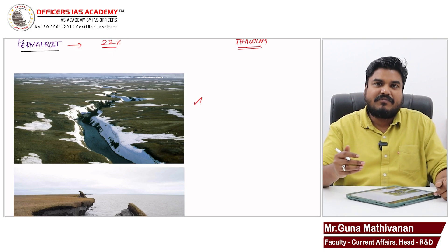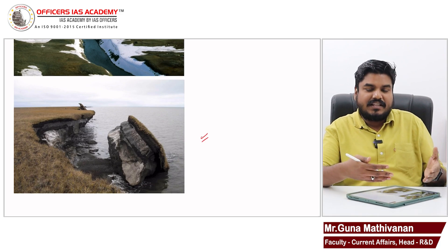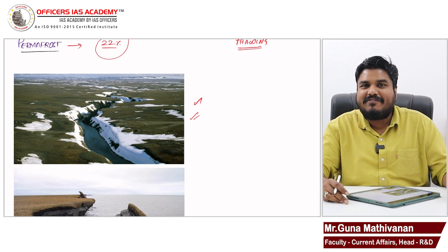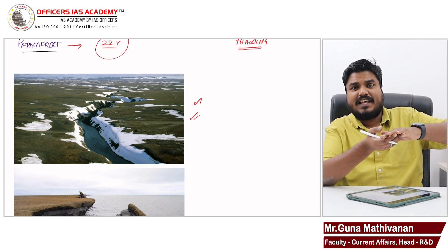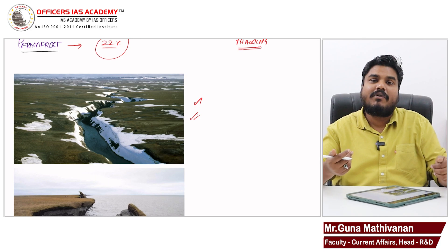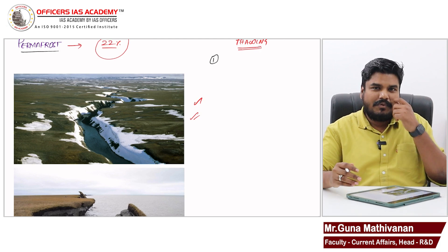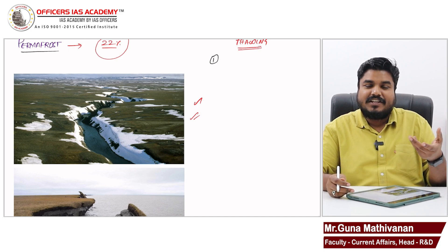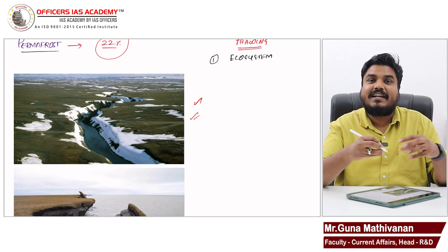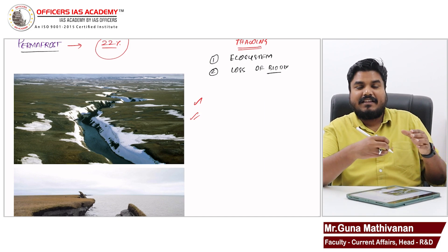What is the problem of this permafrost thawing? Look at these images. The permanently frozen region breaks down and gets melted — 22% of the land area, which has several kilometers of ice thickness, is getting melted. The consequence: permafrost regions also support an ecosystem and life, so when that permafrost region is getting destroyed, the ecosystem it supports is getting affected. There will be loss of biodiversity in that region.